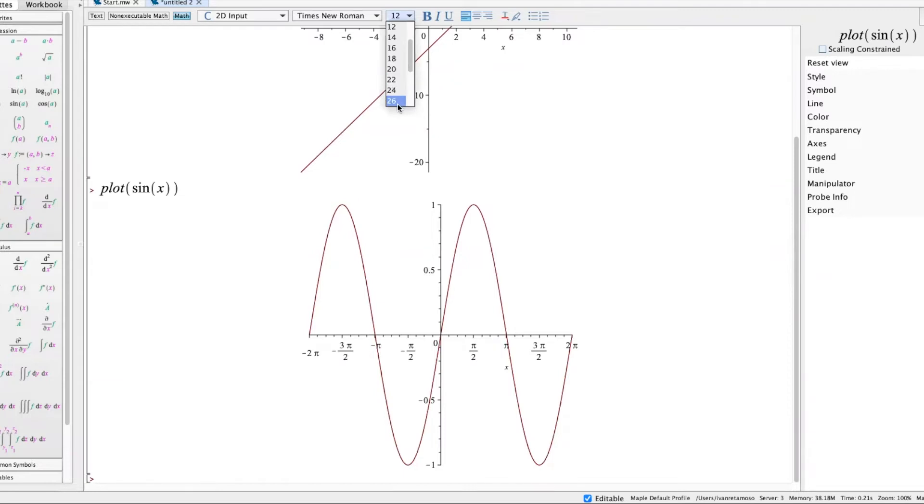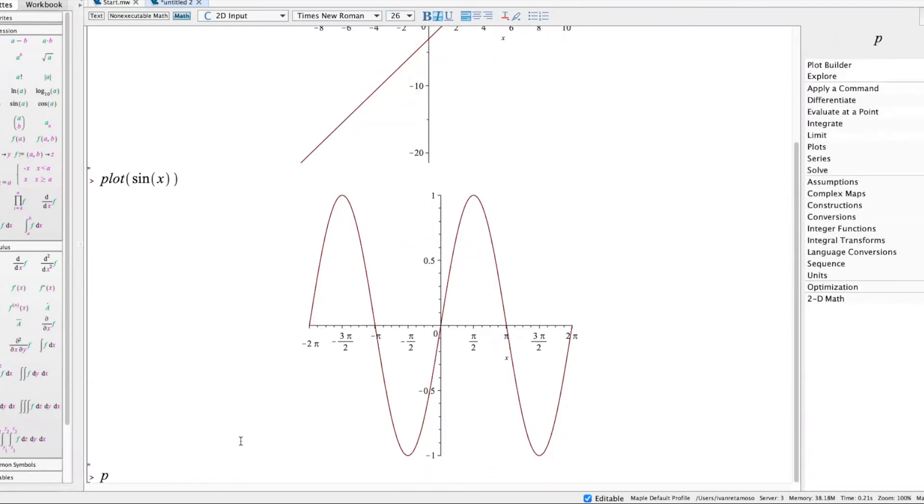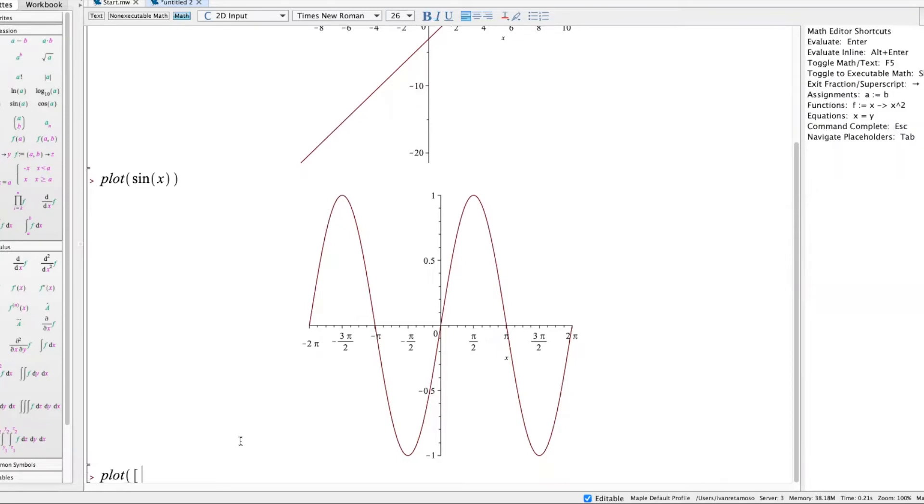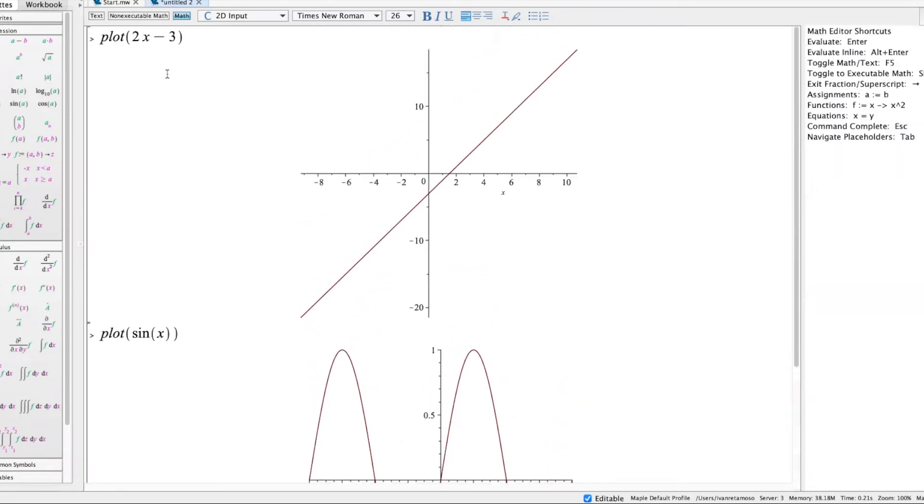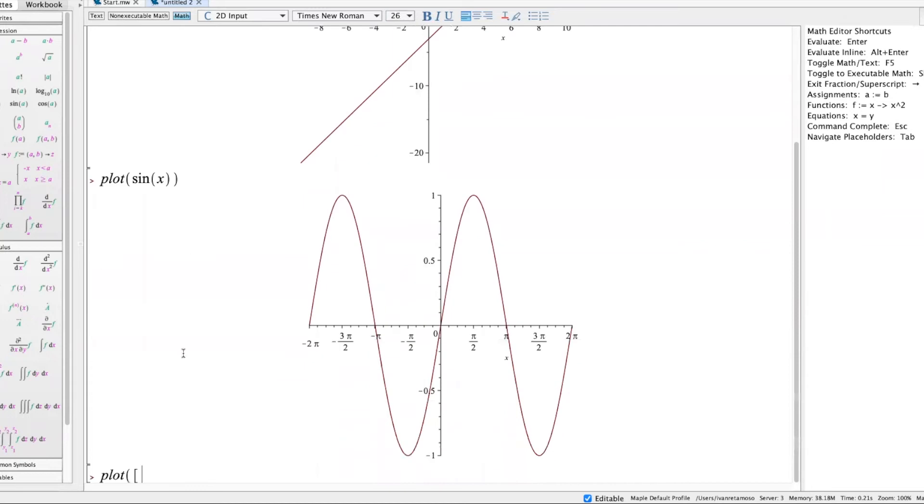Plot again, parenthesis, then within brackets you are going to write the two functions: 2x minus 3, comma,